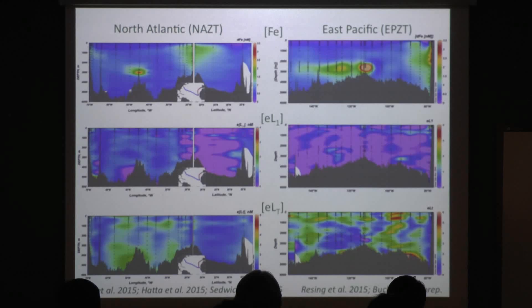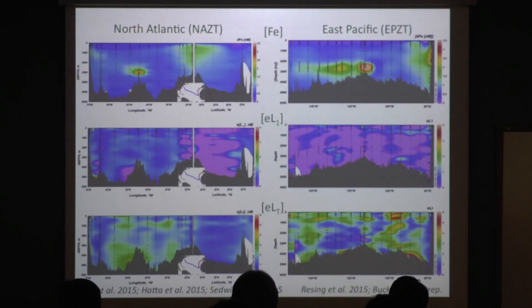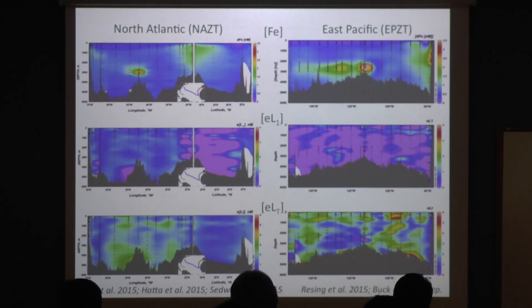This is dissolved iron in both transects — I kept the scales exactly the same. This shows the excess strongest iron-binding ligands, the ligand concentrations measured in excess of dissolved iron. Nearly all of the iron — 99.99% — is bound by organic ligands, and that profile looks very similar to dissolved iron. In the iron data, you can see the influence of the continental margin; the point where the two legs cross is right off of Africa. You also see low-oxygen waters with high surface productivity where iron is remobilized at depth.